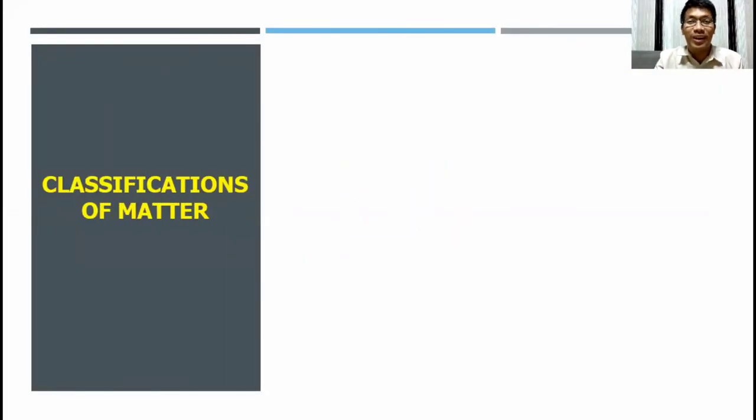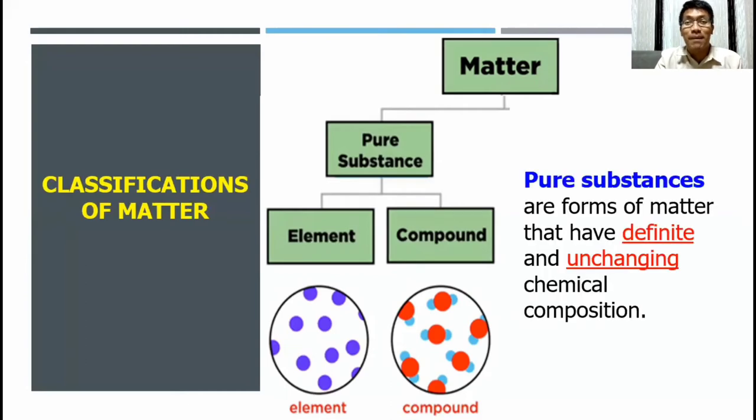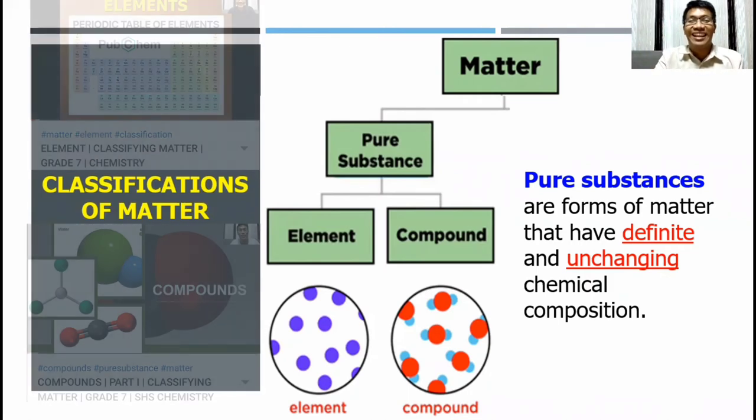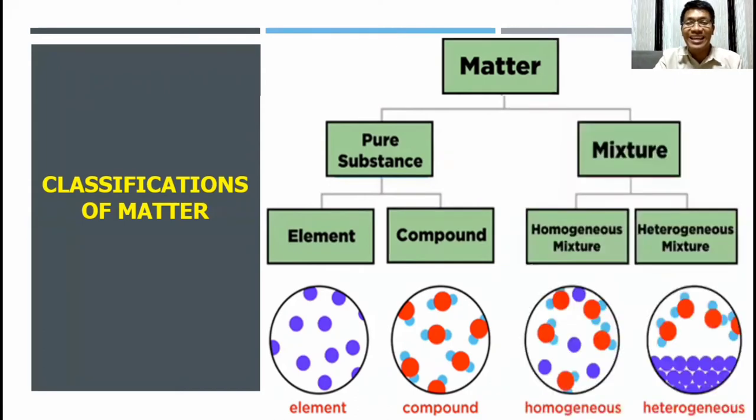Let's have a short review before we continue discussing the details about mixtures. In my previous video, I discussed that matter can be classified into two. The first one is the so-called pure substance. We define pure substance as forms of matter that have definite and unchanging chemical composition. Pure substances can be further divided into elements and compounds. Another classification of matter is our main topic for today, and that is mixture.